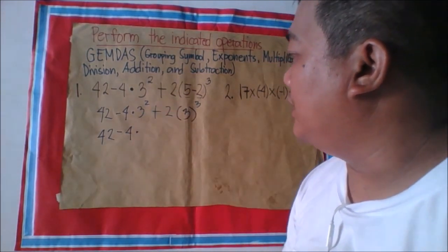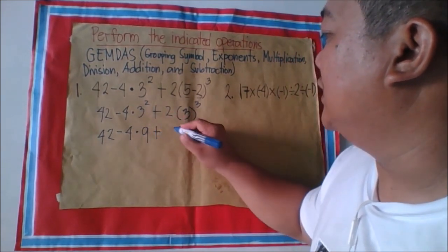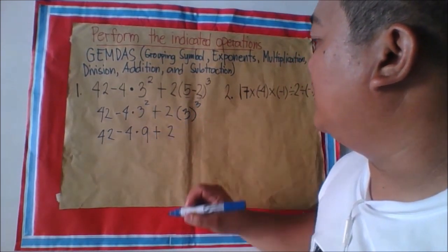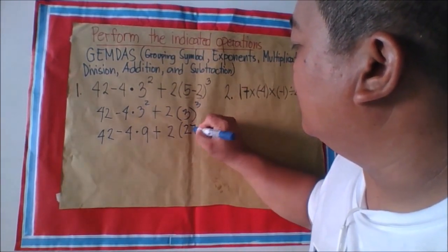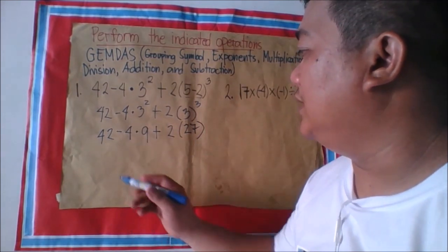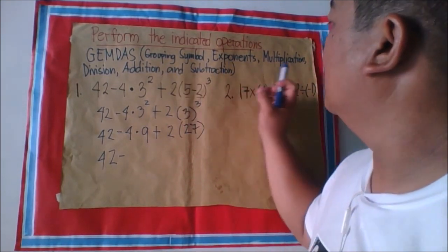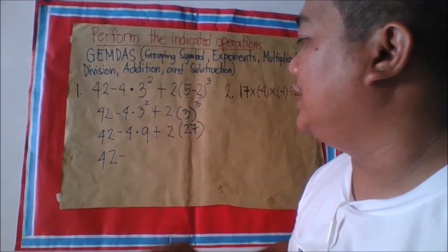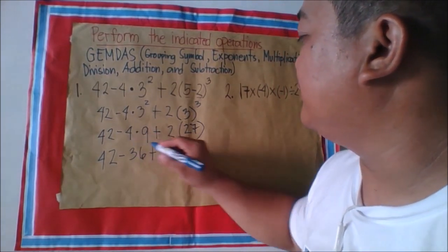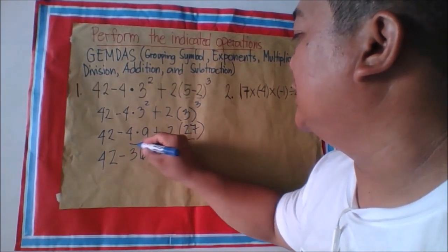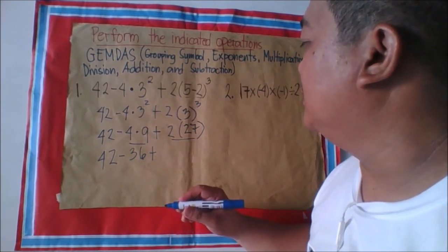So 3 to the power of 2: 3 times 3 equals 9. And 3 to the power of 3: 3 times 3 is 9, times 3 is 27. Okay, so we have 42. Next in order is multiplication: 4 times 9 equals 36. Then 2 times 27 equals 54.